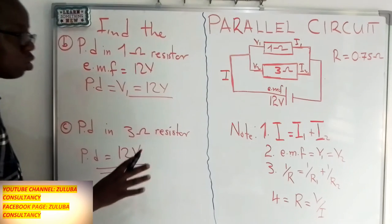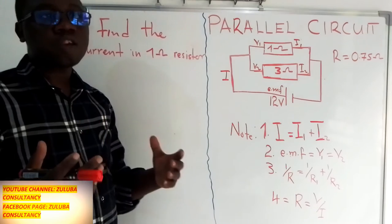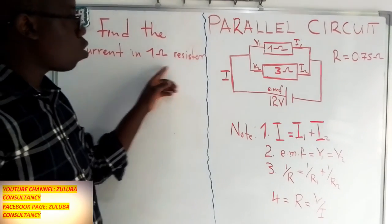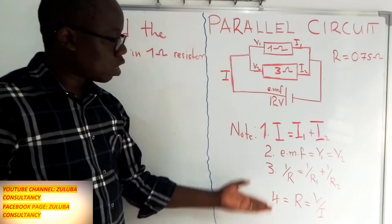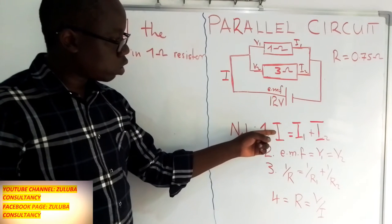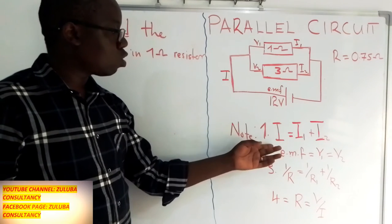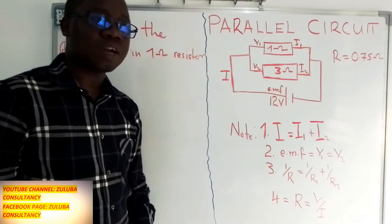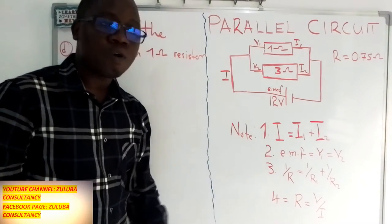In parallel circuits, the potential difference is the same at any point of the circuit. The next question asks us to calculate the current passing through the 1-ohm resistor. We select which equation to use — equation 1 requires total current and another current for subtraction, so we cannot use it. Hence we settle for Ohm's law.